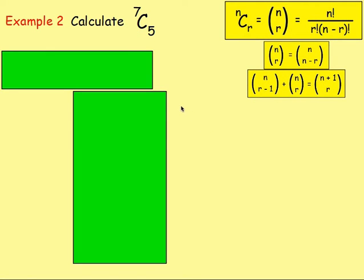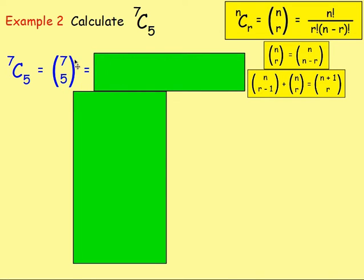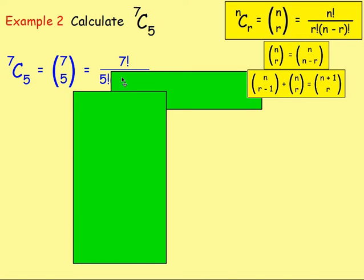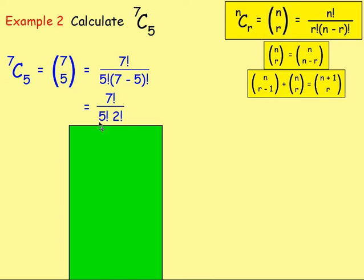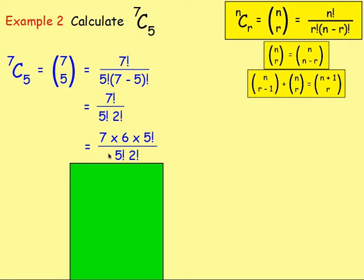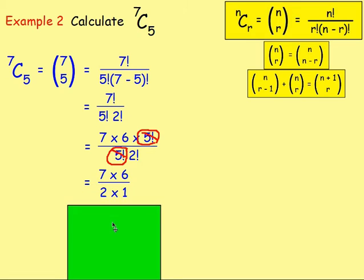Example two: calculate 7 choose 5. Replacing n with seven and r with five gives seven factorial over five factorial times (seven minus five) factorial. Seven minus five is two, so that becomes seven factorial over five factorial times two factorial. Writing seven factorial as seven times six times five factorial allows you to cancel the five factorials, leaving seven times six on top and two factorial (two times one) on the bottom: 42 divided by two equals 21.